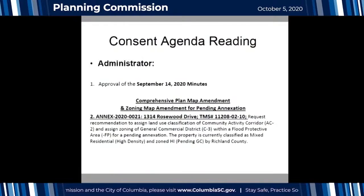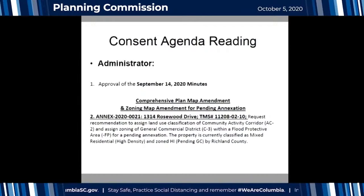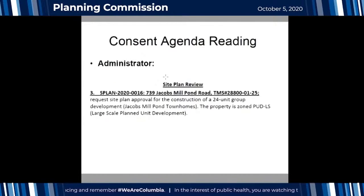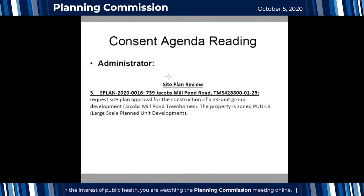Today's consent agenda has three items. First is approval of the September 4th and 14th, 2020 meeting minutes. Second is a comprehensive plan map amendment and zoning map amendment for a pending annexation at 1314 Rosewood Drive — a request to assign a land use classification of community activity corridor and zoning of general commercial district within a flood protective area. Third is a site plan review at 739 Jacobs Mill Pond Road for construction of a 24-unit group development, the Jacobs Mill Pond Townhomes, on property zoned large-scale planned unit development.